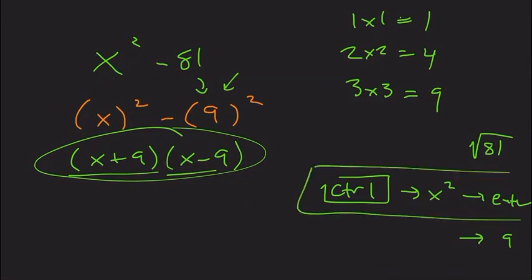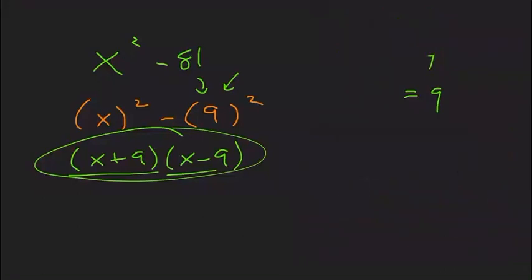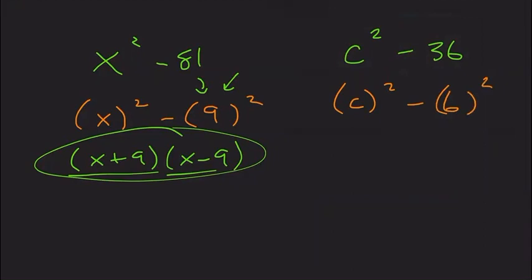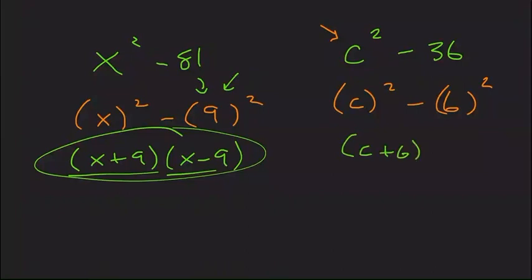Let's look at one last one together. Let's say we have c squared minus 36. This is c squared minus 6 squared. Whenever we just have a variable squared, it's just going to be the variable inside. So this one would be (c + 6) times (c − 6).